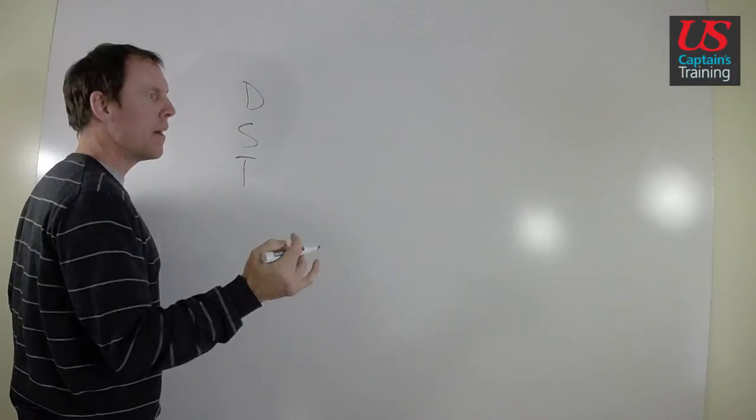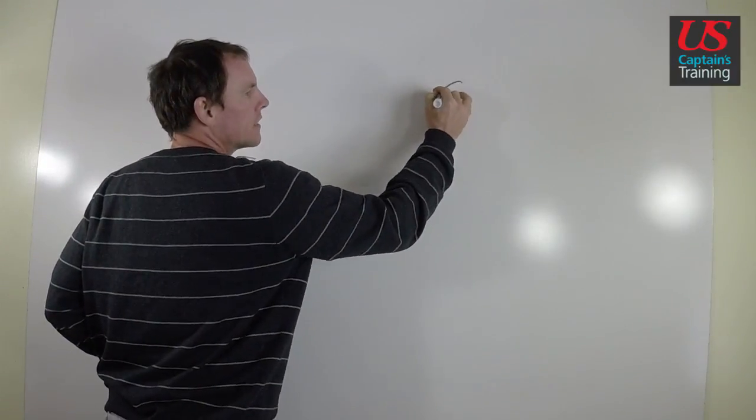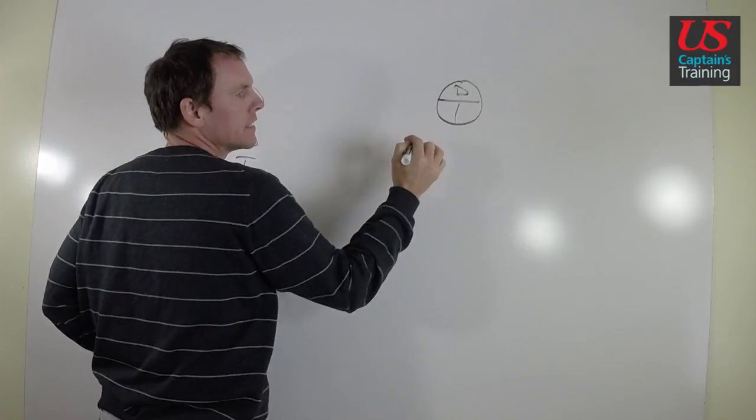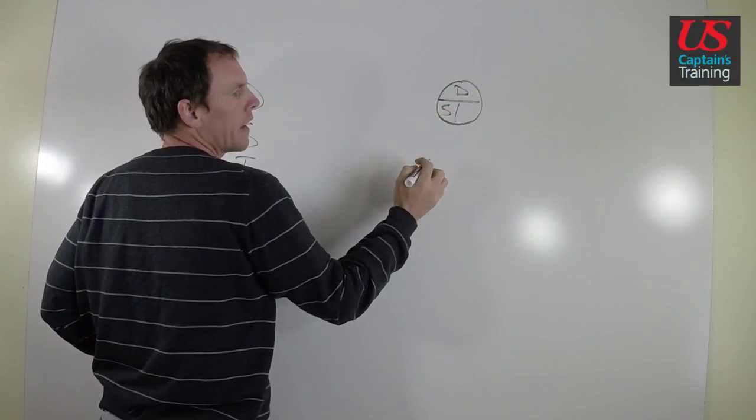And we have a memory aid to help us. A lot of times we'll refer to this as D Street. We have distance on the top, speed on the bottom left, and time on the bottom right.